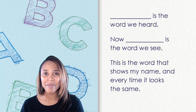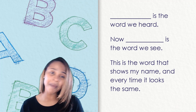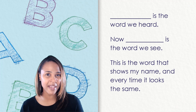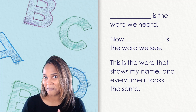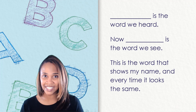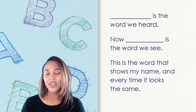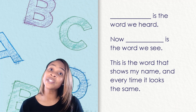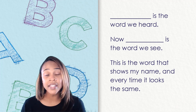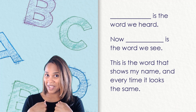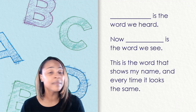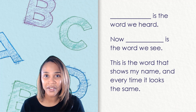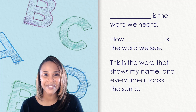But now I'm going to read it again, and this time I'm going to fill in those blank spaces with my name. Ready? Follow along again as I read through. Rachel is the word we heard. Now Rachel is the word we see. This is the word that shows my name and every time it looks the same. Now those blank spaces were filled with my name and I was able to read them.